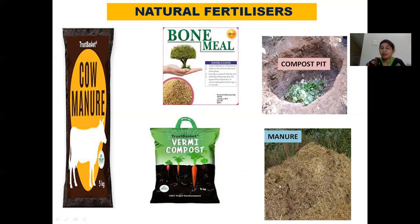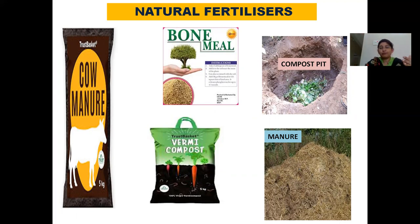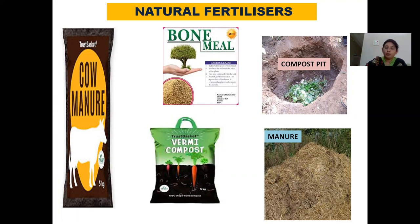If you see this manure, it's a picture you mostly come across on the way to villages — heaps of dry grass called hay, along with cow dung, left for many weeks so it can be decomposed by soil organisms and converted into the natural fertilizer we call manure. These are the examples of natural fertilizers.